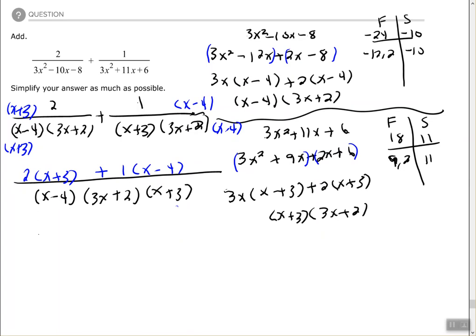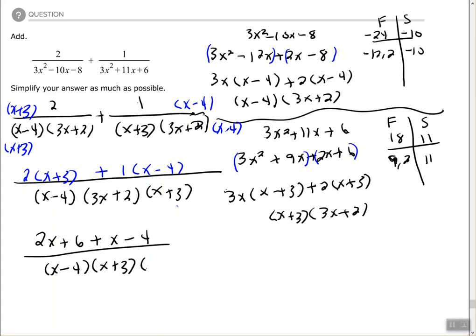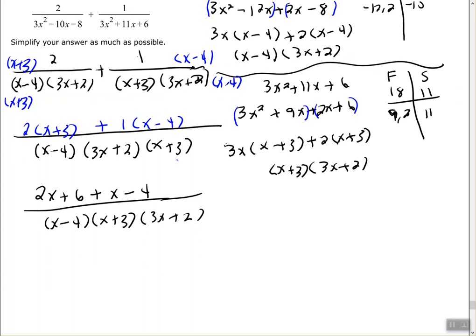Let's clear the parentheses: 2x plus 6 plus x minus 4, all over the common denominator. Now combine like terms: 2x plus x is 3x, and 6 minus 4 is 2. So the numerator becomes 3x plus 2.